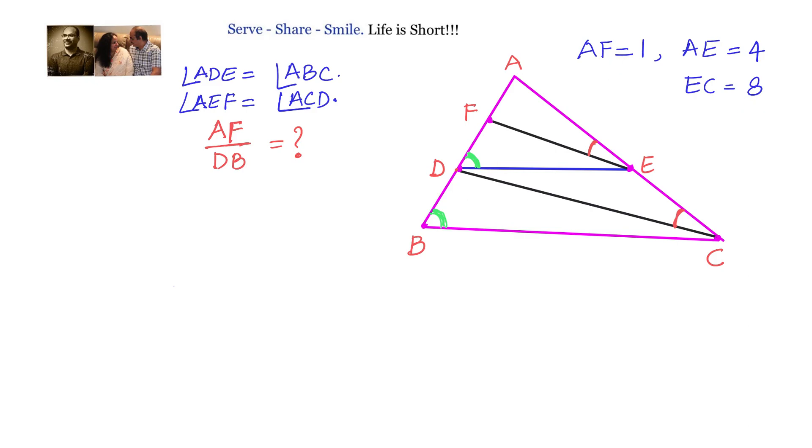AF is 1, AE is 4, EC is 8. Now we have to find out what is AF divided by DB. We will solve this problem by using basic proportionality theorem.